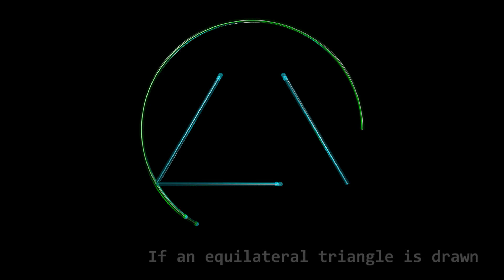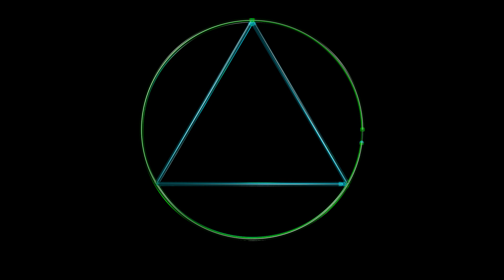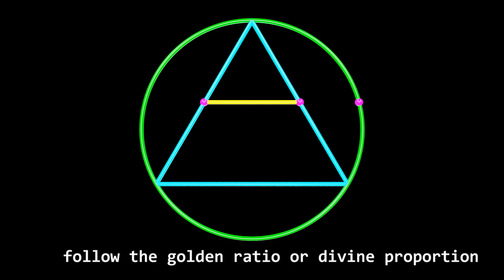If an equilateral triangle is drawn inside a circumference, the distance between the middle points and the distance from the middle points to the external circumference follow the golden ratio or divine proportion.